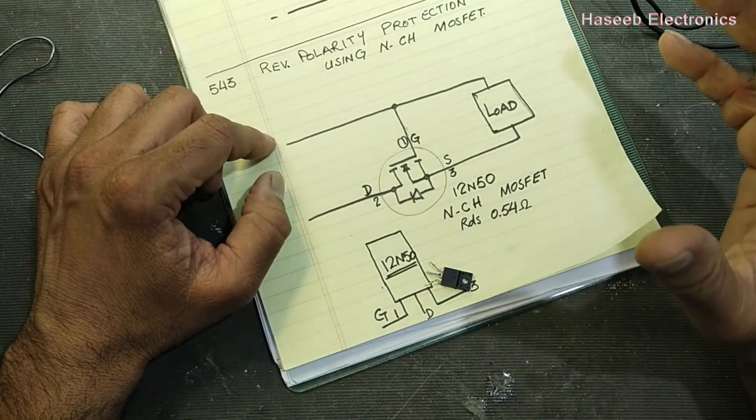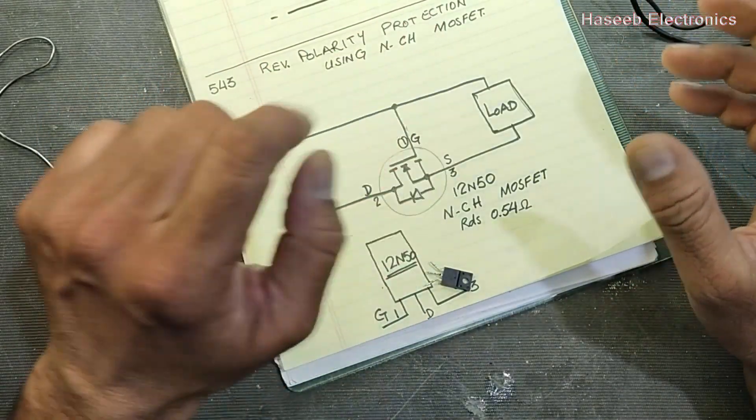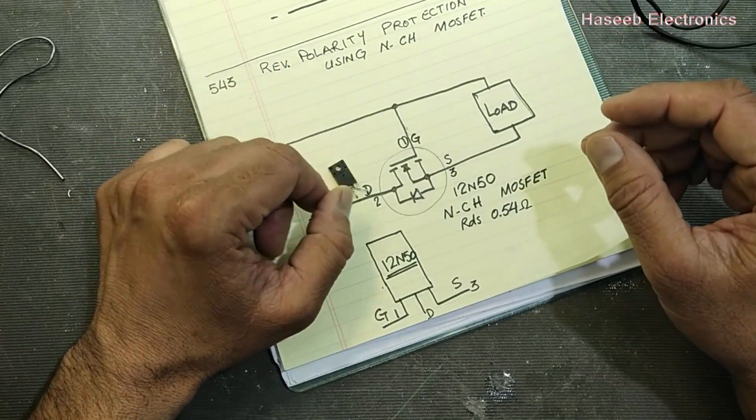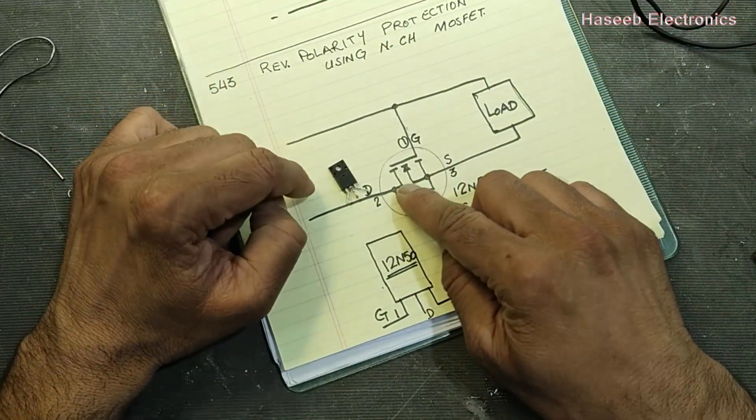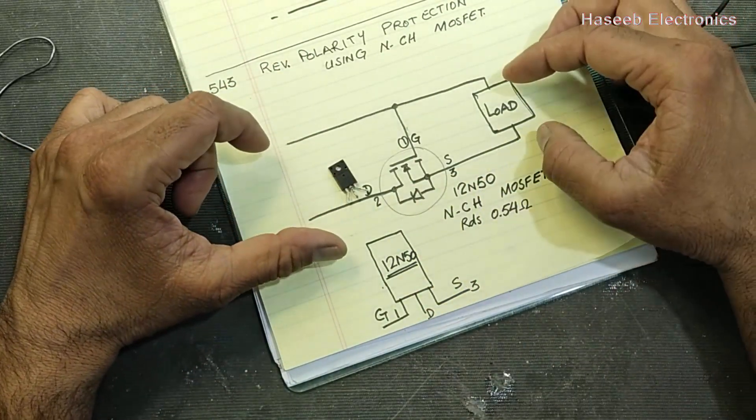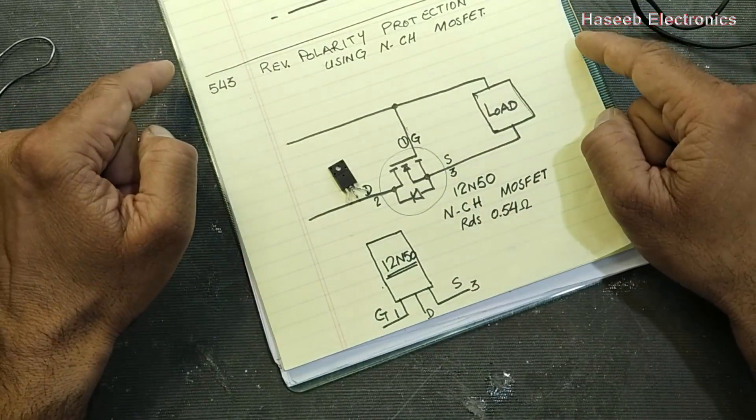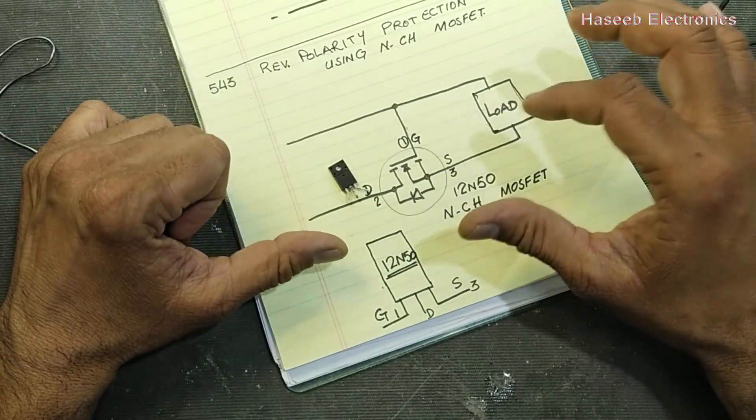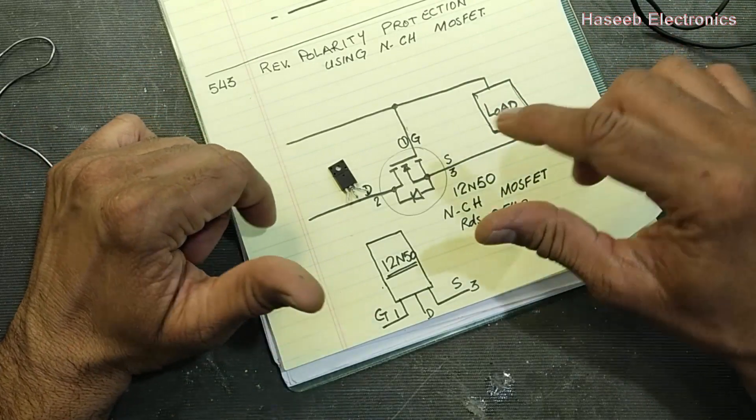This MOSFET allows current to pass when the voltages are in good polarity. We can use P-channel MOSFET and we can also use N-channel MOSFET.